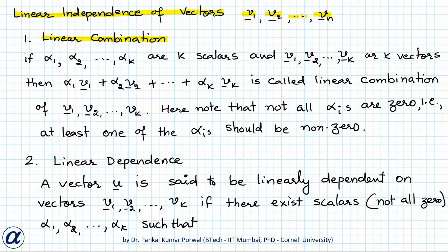If we are given k vectors v1, v2, ..., vk and k scalars alpha_1, alpha_2, ..., alpha_k, then the expression alpha_1*v1 + alpha_2*v2 + ... + alpha_k*vk is called a linear combination of the vectors v1 through vk. Note that for this to be a valid linear combination, not all alpha_i's can be zero — at least one must be non-zero.